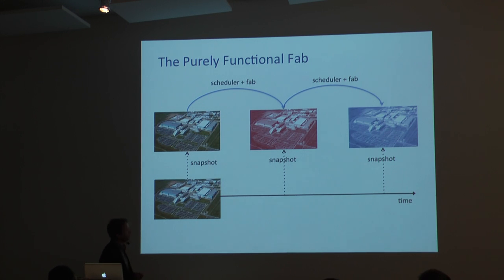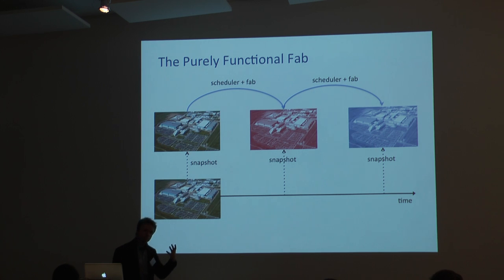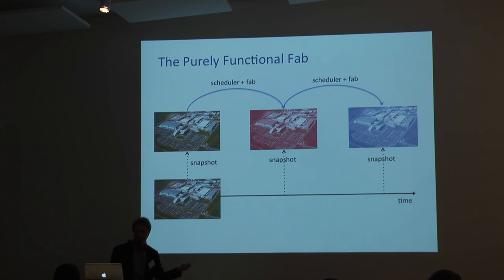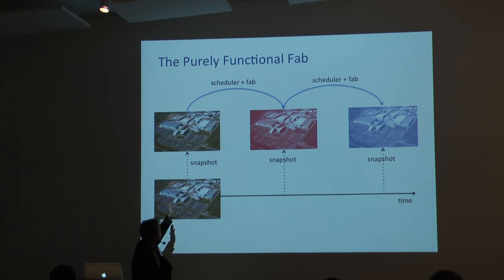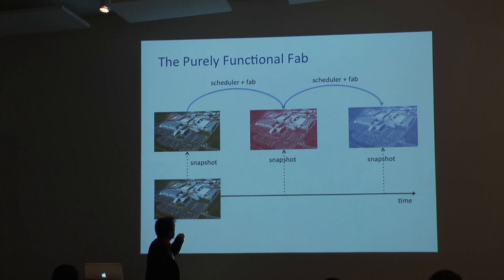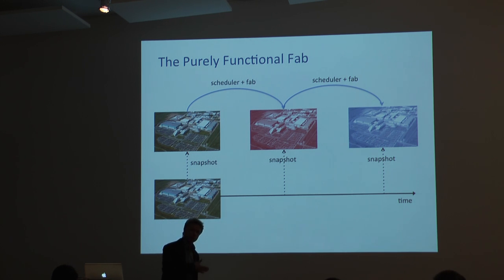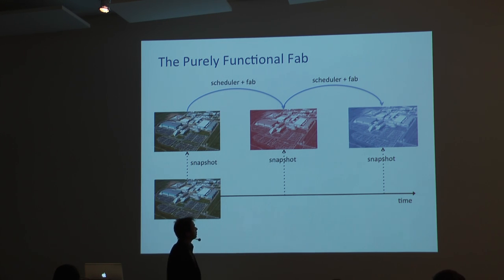The system we really wanted to build was a purely functional system. The very important conceptual thing for purely functional programmers is that you have a representation of the state of the fab at a certain time that you put in your computer. As the actual fab mutates its own state, you create new representations for the state of the fab at later times. You have one object representing the fab state at time X, you advance the fab simulator, and then you have another object representing the state at time X+1, X+2, and so on. These are all separate, conceptually independent objects that you can access independently.